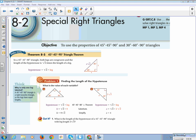All right, so this is Chapter 8, Section 2, Special Right Triangles. Our learning objective is to use properties of 45-45-90 and 30-60-90 triangles.